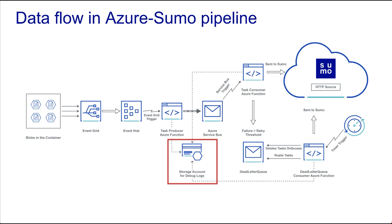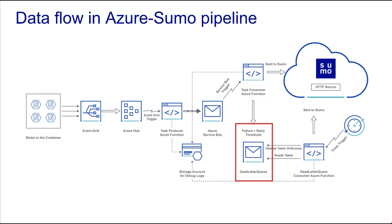The storage accounts created are named SumoBR Logs with a unique suffix attached. If the Task Consumer function is unable to process or send a message due to throttling or failure, upon reaching a max delivery count threshold of 3, it sends the message to a secondary sub-queue called a dead-letter queue, or DLQ.